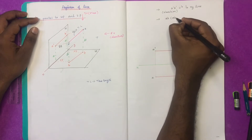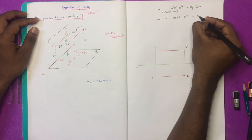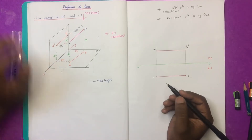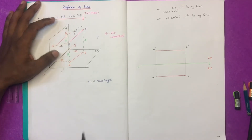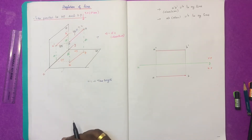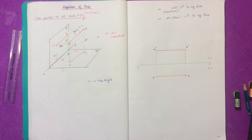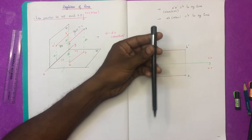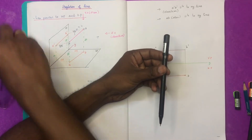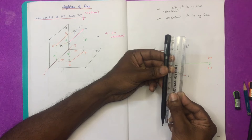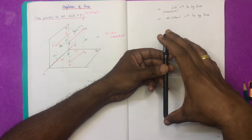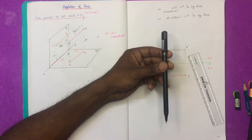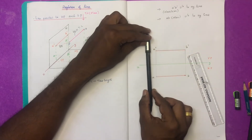This is the plan of the line which is parallel to the XY line. The plan is parallel to the XY line. Point A is 30 mm from HP and B is also 30 mm from HP because it is parallel to HP. So this is the plan of the XY line. This length is the actual or true length — approximately 15 cm.